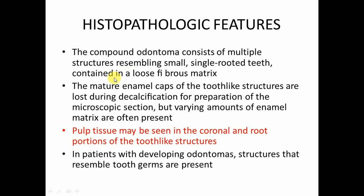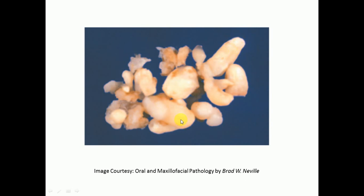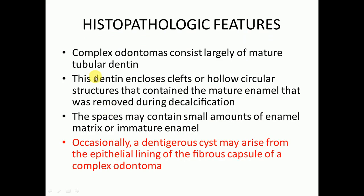Regarding histopathological features, the compound odontoma consists of multiple structures resembling small single-rooted teeth contained in a loose fibrous matrix. Mature enamel caps of the tooth-like structures are lost during decalcification, but varying amounts of enamel matrix are often present. Pulp tissue may be seen in the coronal and root portions. Complex odontomas consist largely of mature tubular dentine enclosing clefts or hollow circular structures that contained the mature enamel removed during decalcification.